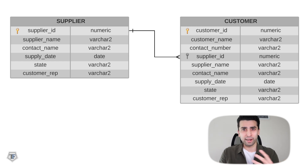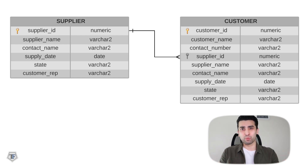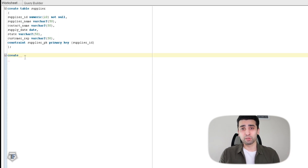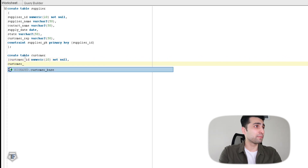I hope that clears up the basic understanding of what is primary key and what is foreign key. A lot of people struggle with these terms, but to be honest, if you just understand the logic that these are the keys used to join tables with each other, that's pretty much what you want to know.